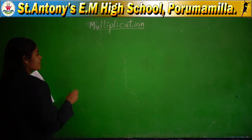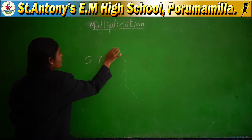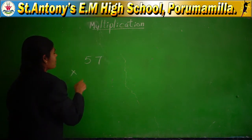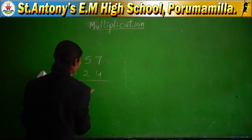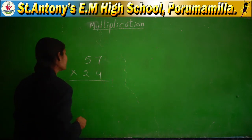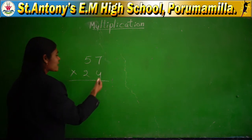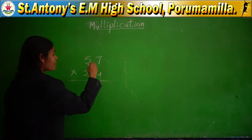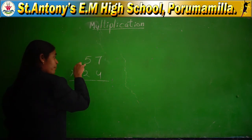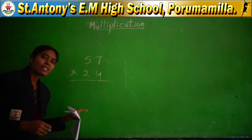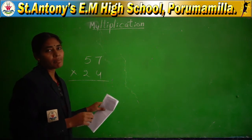Coming to double digit multiplication. Take 57 into 24. With double digit multiplication, you have to start from the 1's place in the multiplier as well as in the multiplicand. First take 4 from the multiplier, and 7 from the multiplicand — start from 7 with 4. You have to multiply 57 totally with 4, and after that with 2.